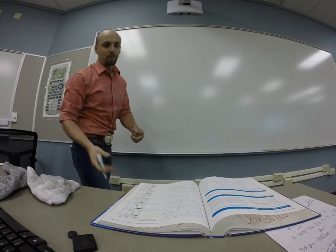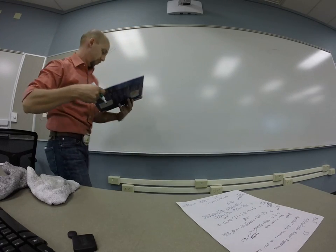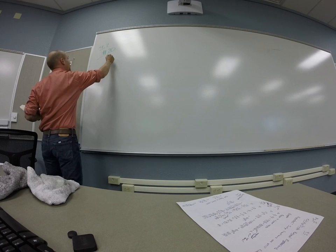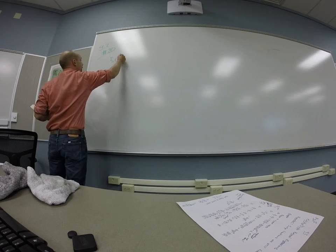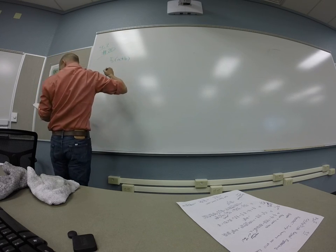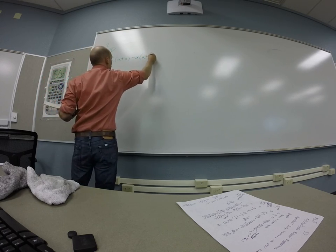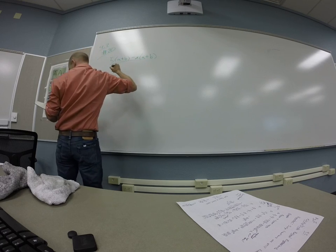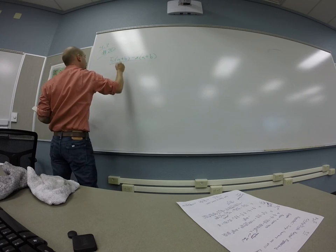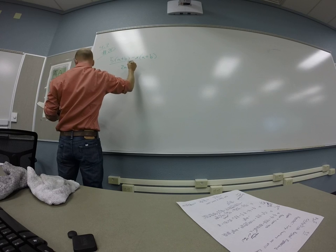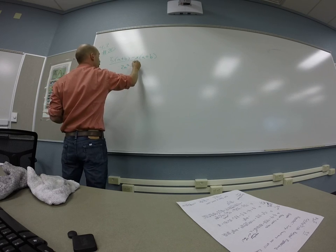Okay, so number 29.2 is we want to take 5 times a plus b minus x times a plus b divided by 2a squared minus 2b squared.